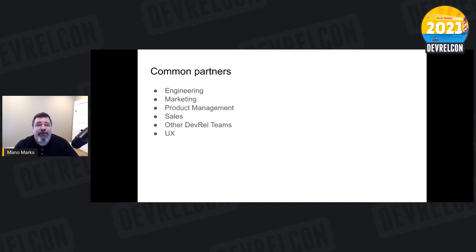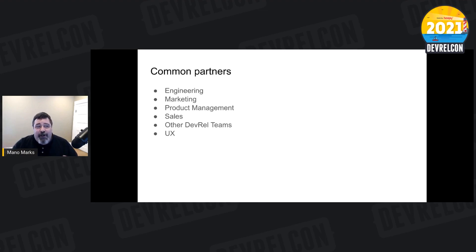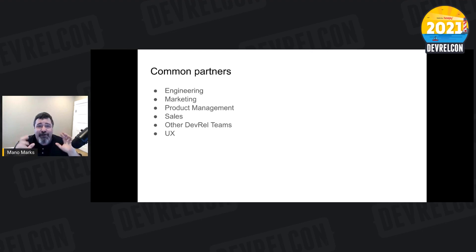Here are some of the common partner teams: engineering, marketing, product management, sales teams, other developer relations teams — particularly at a larger company, you may be split into different kinds of roles where you have to establish these partnerships. User experience design, and a whole list of others. The most common ones are the top three: engineering, marketing, and product management. In fact, your DevRel organization or the DevRel person may sit within one of these teams.